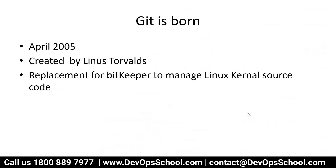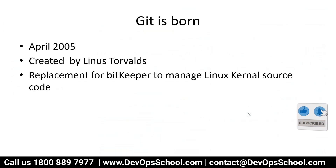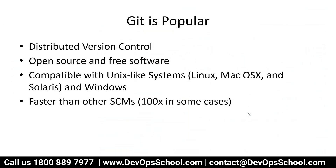Linus Torvalds is the father of Linux and he is also the one who created Git. Git was developed as a replacement for BitKeeper, which was a versioning control tool that Linus and his team were using for storing the source code of the Linux kernel. Git is a distributed version control system — we need to discuss what that means.